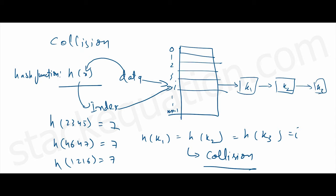So let's say for values k1, k2, k3 it returned i. So at index i there will be a linked list of these three elements which will start from k1, it will point to k2, it will point to k3 and so on.